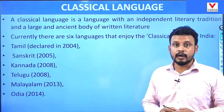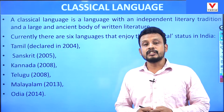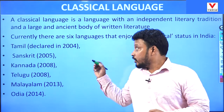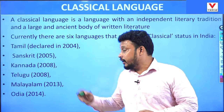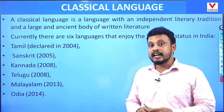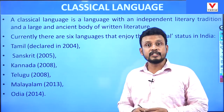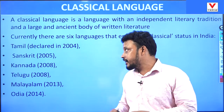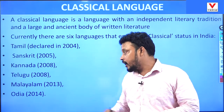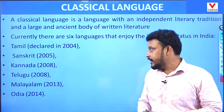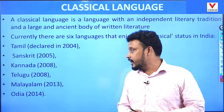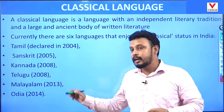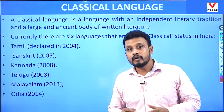Presently, there are six languages which are enjoying classical language status. Those are Tamil, which became the first language to be declared as classical language in 2004, then Sanskrit in 2005, then Kannada in 2008, then Telugu in 2008, then Malayalam in 2013, then Odia in 2014.